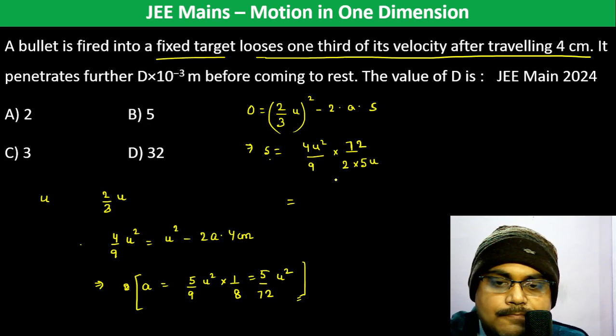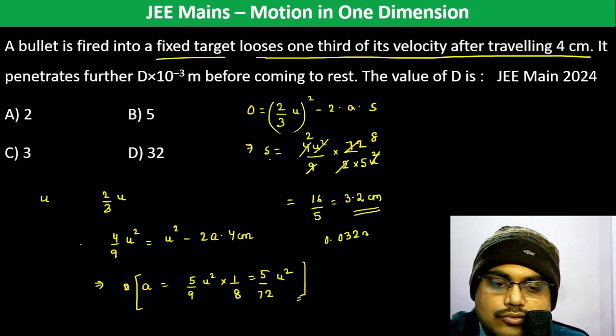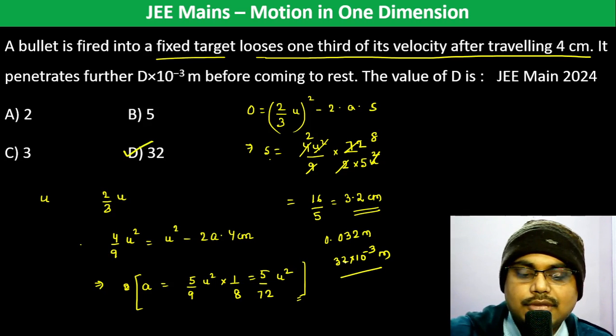So s is going to be, U² cancels out, it's 16/5 which is 3.2 centimeters, 0.032 meter, so 32×10⁻³ meter. So D is 32, that's the answer.